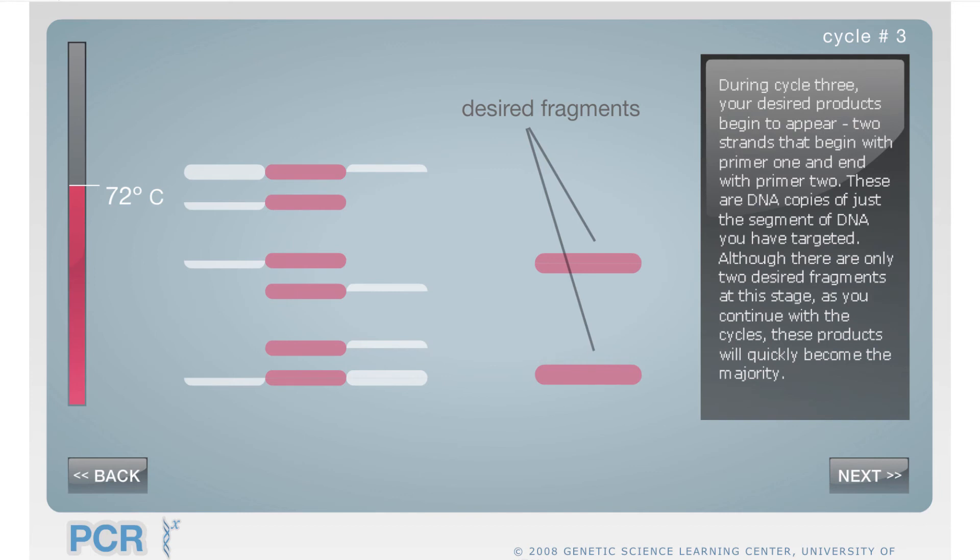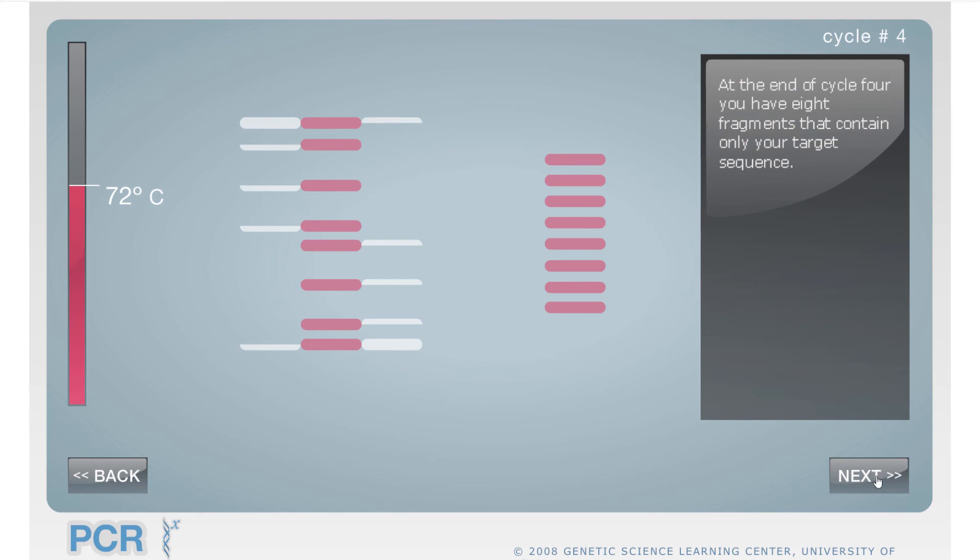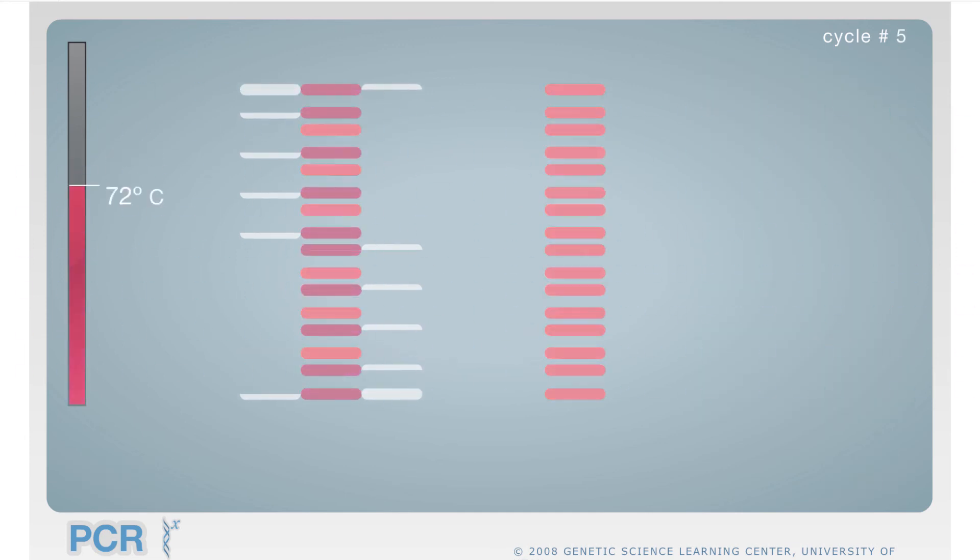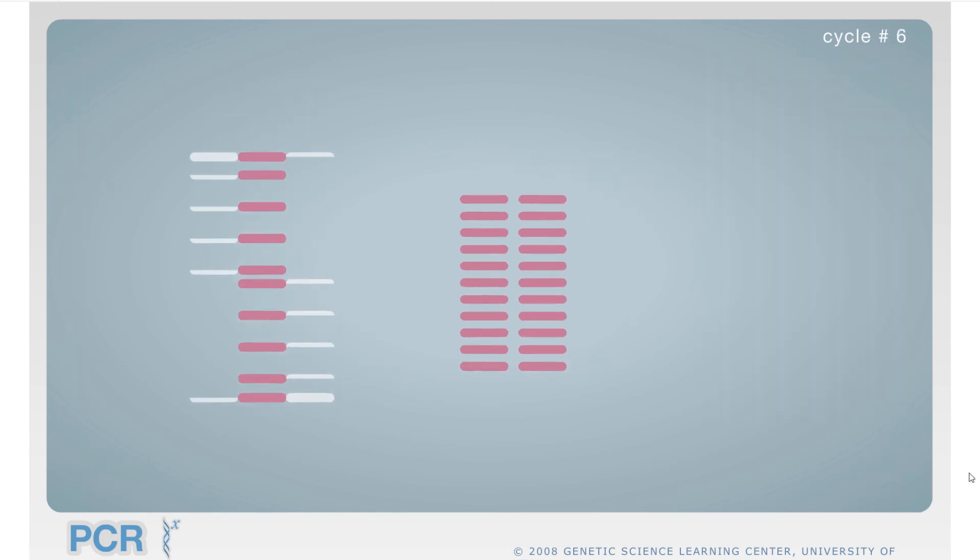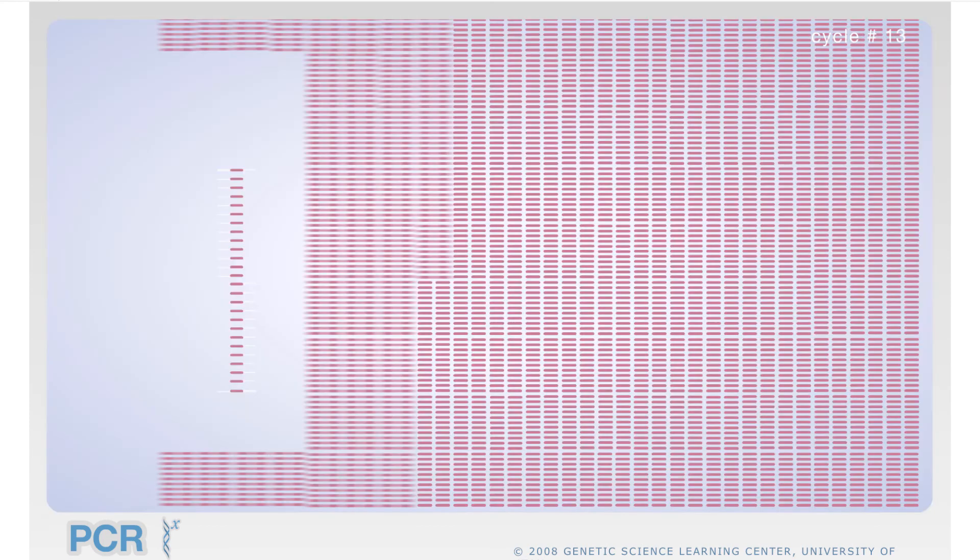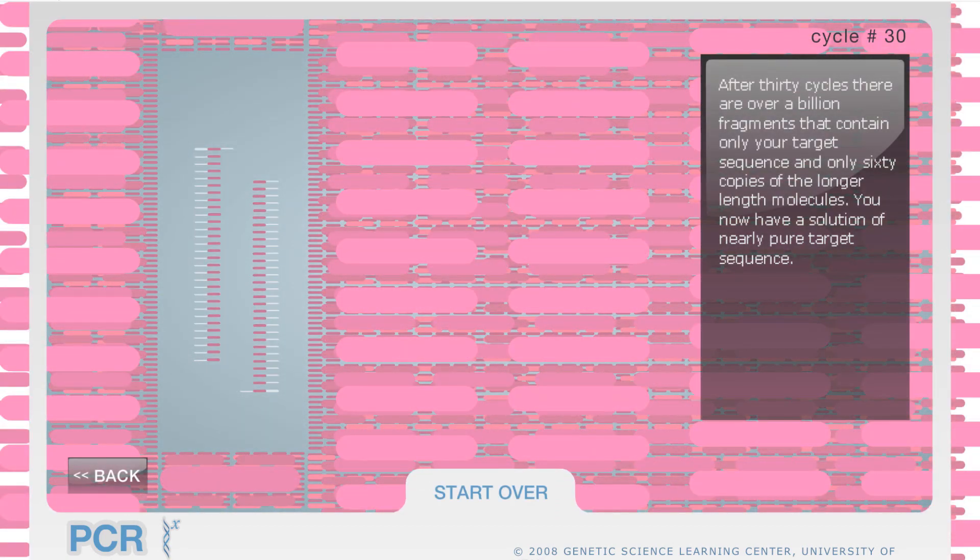The first three cycles still contain unwanted sequences from the original sample. But after cycle 3, you start to get specific sequences bounded by your primers. Now we cycle 30 times and we get billion copies of our target sequence and only 60 copies of our unwanted fragments. That's less than 0.00001 impurities. So our amplified sample is almost 100% pure here.